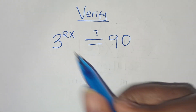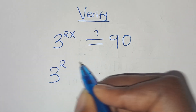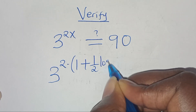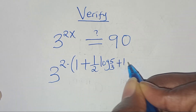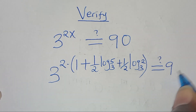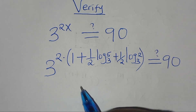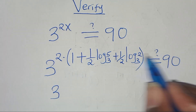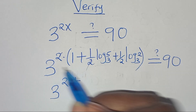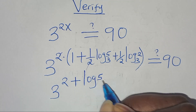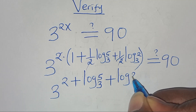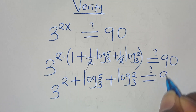Substituting the value of x, we have 3 to the power of 2 multiplied by (1 plus one-half log base 3 of 5 plus one-half log base 3 of 2), and this should equal 90. Opening the parentheses, we get 3 to the power of 2 plus log base 3 of 5 plus log base 3 of 2, which should equal 90.